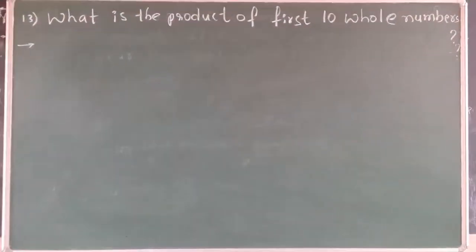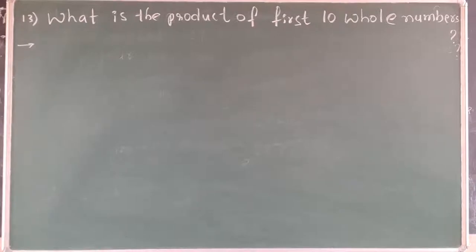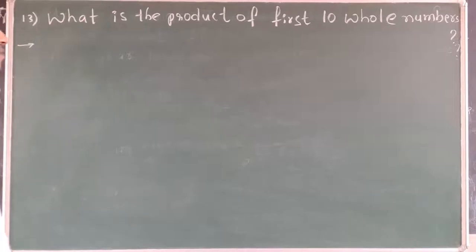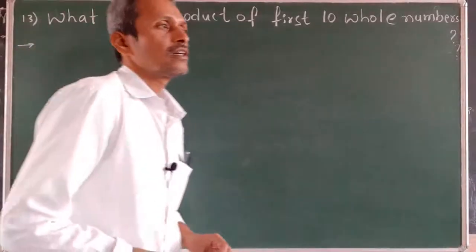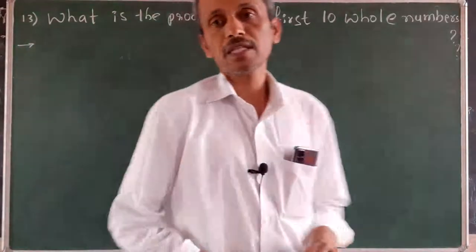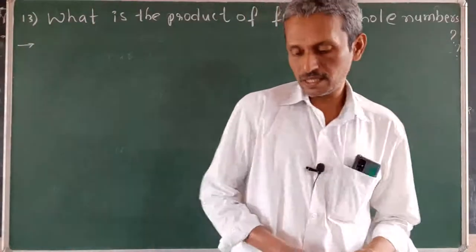Now we will find the product of the first 10 whole numbers. First of all, we should know what are the whole numbers, then what are the first 10 whole numbers, and then we should find the product of these first 10 whole numbers.